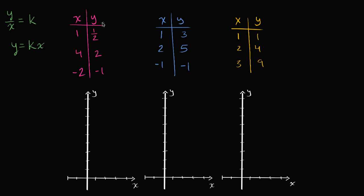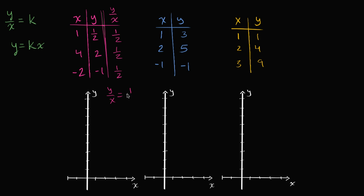Let's look at these three relationships. I'll add a y-over-x column and figure out what this ratio is for each pair. For the first pair, when x is one, y is 1/2, so the ratio is 1/2. When x is four, y is two — two over four is 1/2. When x is negative two and y is negative one, negative one over negative two is also 1/2. So the ratio between y and x is always 1/2; k equals 1/2. We can write y over x equals 1/2, or equivalently, y equals 1/2 x.